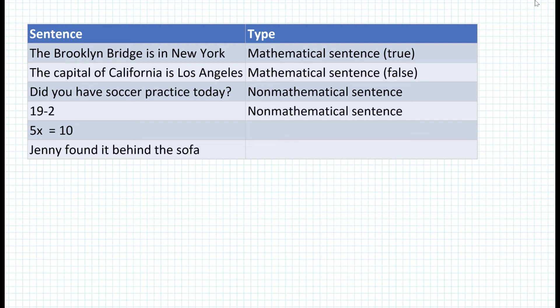Then we have 5x equal to 10. Now we see a variable here, and since we have a variable, that is called an open sentence — the variable is x. What about Jenny found it behind the sofa? It's not stating anything mathematical, but we do have an open sentence here, because the variable is 'it'.